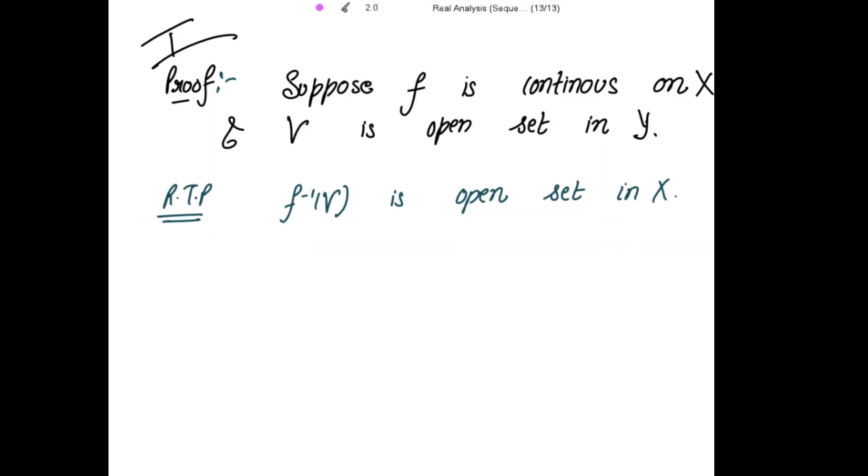Now let's start with the proof. Suppose f is continuous on X and V is an open set in Y, and we have to prove that f inverse of V is an open set in X. To prove that f inverse V is open in X, we have to prove that every point of f inverse V is an interior point of f inverse V, in accordance with the definition of an open set.